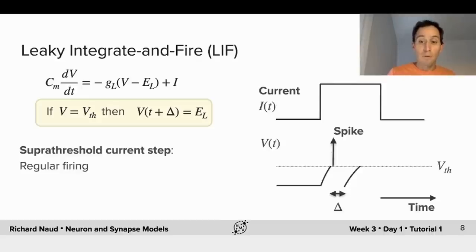And after a time delta, we restart the dynamics at the equilibrium potential. And then, since the current remains high, we keep on increasing the membrane potential until we reach again the threshold, we spike and start again.